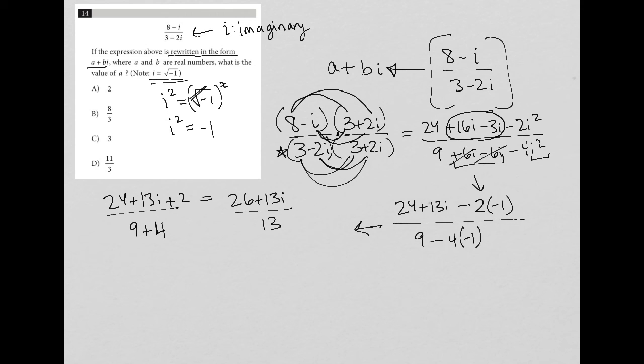Then I can simplify this, right, so I can reduce this fraction because 13 goes into 26 and it goes into 13. So 13 goes into itself one time, 13 goes into 26 two times, 13 goes into this 13 one time. So what I'm left with is 2 plus basically 1i. And that is in the format of a plus bi, in which case a equals 2 and b equals 1.